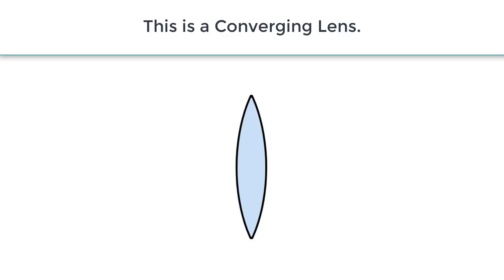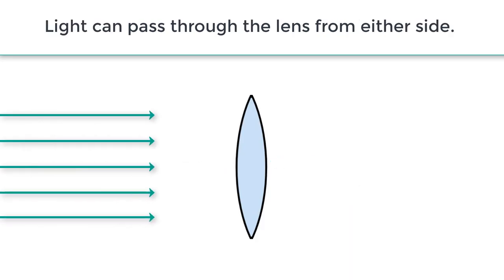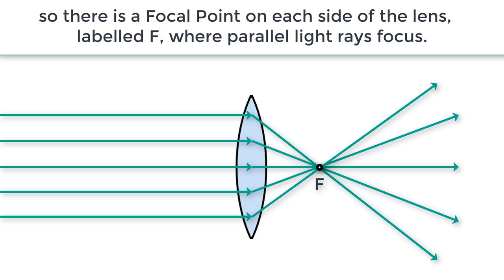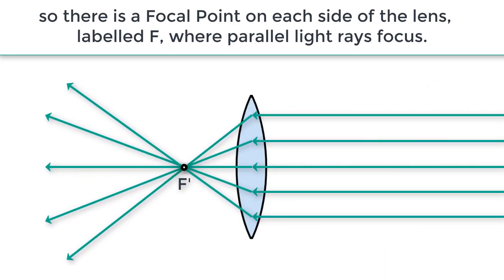This is a converging lens. You can see that it's curved on both sides. Light can pass through the lens from either side, so there's a focal point on each side of the lens labeled F where parallel light rays focus.